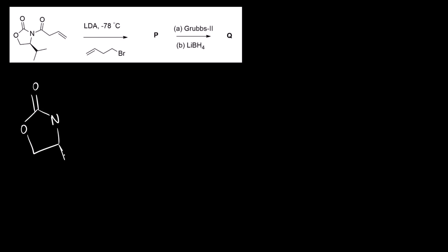Let us draw the product now. The compound P that we had: nitrogen above the plane with the isopropyl group, C double bond O, C double bond O, and below the plane there is the R group — one carbon, two carbon, three carbons.